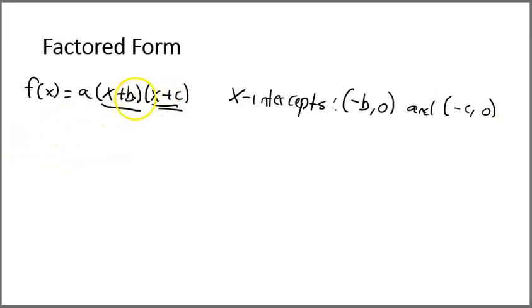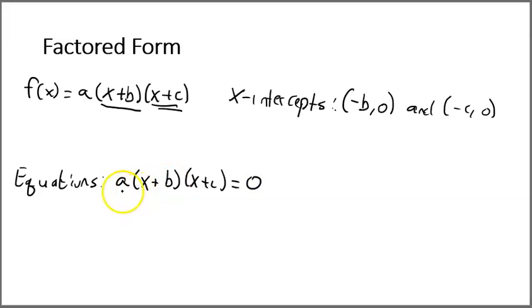So we like factored form because it gives us intercepts. In fact, when we factor an equation, we can find and solve equations really quickly. So the factored form, again, as an equation, looks like this: that form equal to 0. And so when we factor so far in this course, we have done this and set them equal to 0, right? And we use the 0 product property.